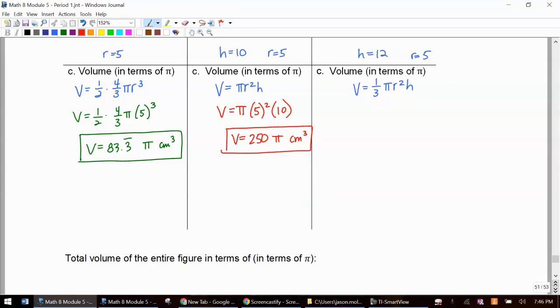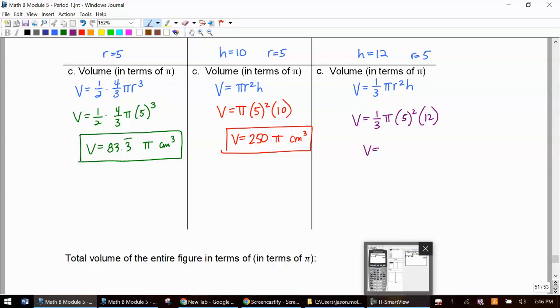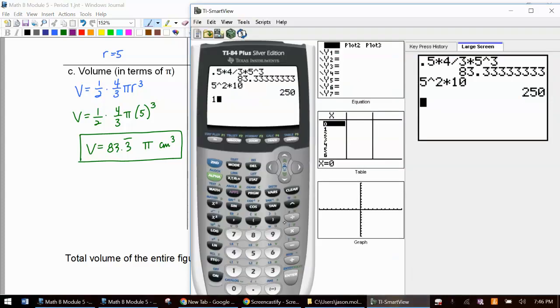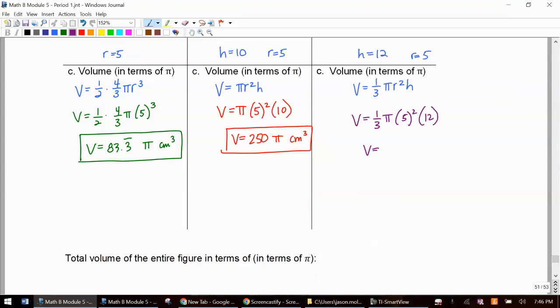And the last one is our cone. And we have one third times, the height was 12 times five squared. 100π. We didn't press the π button there and centimeters cubed.